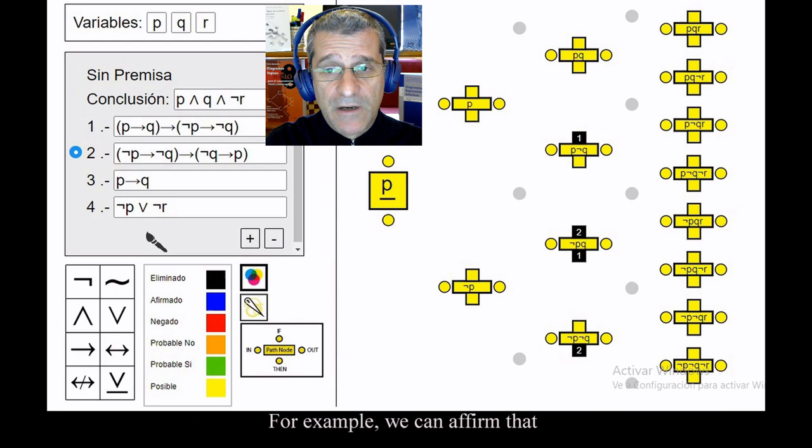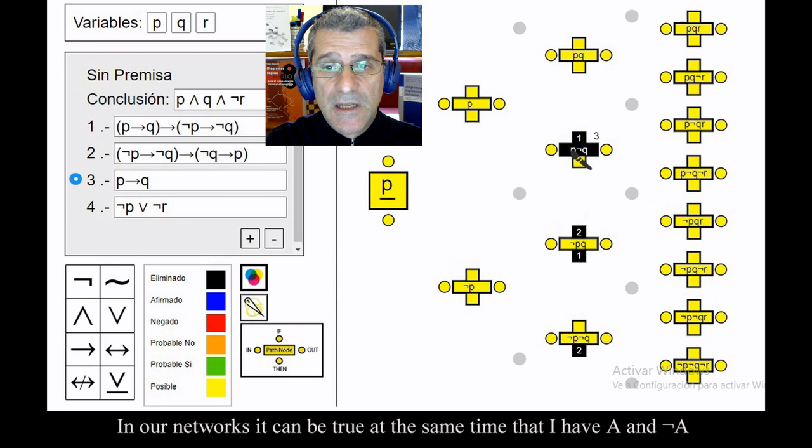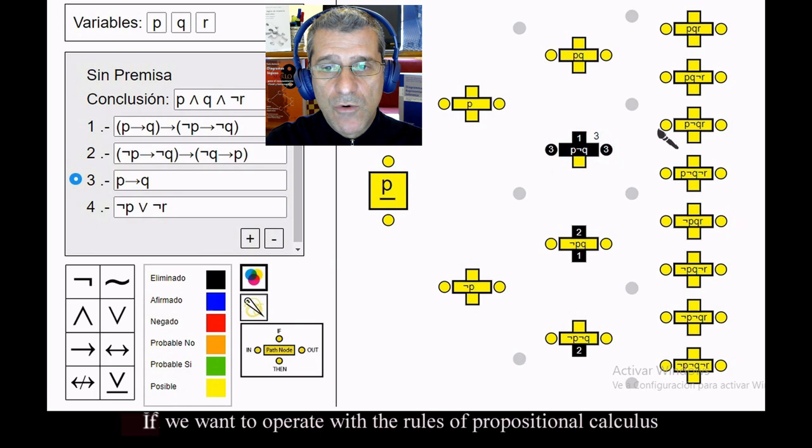In our networks, it can be true at the same time that I have A and NOT A. If we want to operate with the rules of propositional calculus, we must establish that only one object node can be true at this moment.